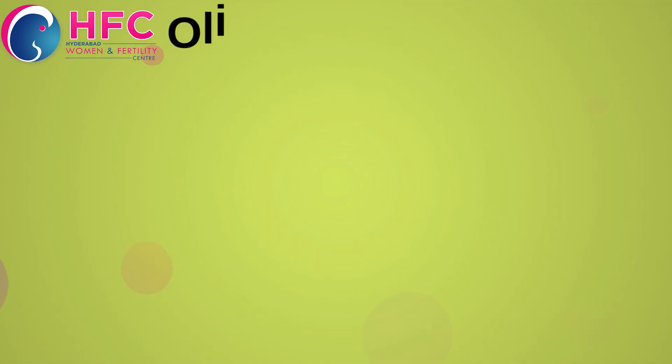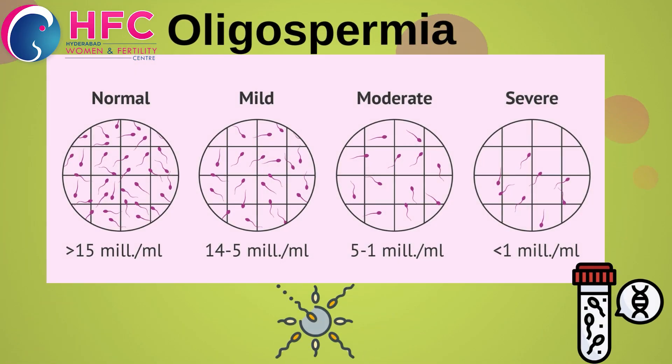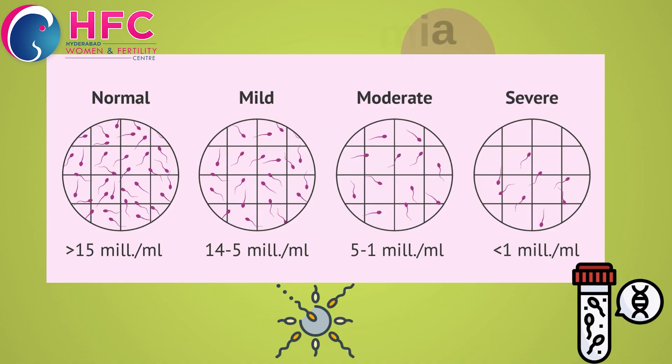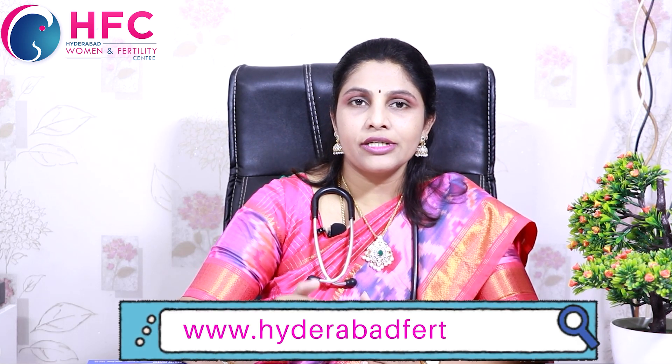We classify low sperm count as mild, moderate, and severe oligospermia. Severe oligospermia is less than 5 million. Moderate is 10 to 15 million. 5 to 10 million is a milder degree. So these categories are mild, moderate, and severe.